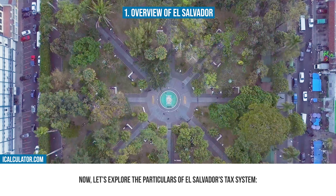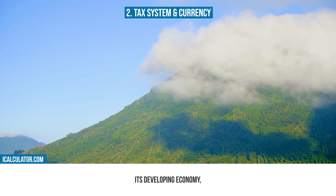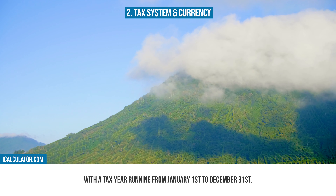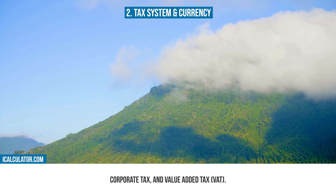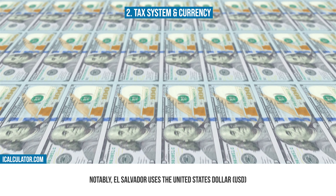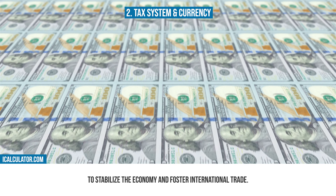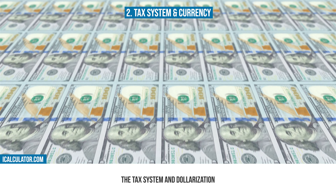Now, let's explore the particulars of El Salvador's tax system. El Salvador's tax system is structured to support its developing economy, with a tax year running from January 1st to December 31st. It includes progressive income tax, corporate tax, and value-added tax (VAT). Notably, El Salvador uses the United States dollar (USD) as its official currency, a decision made in 2001 to stabilize the economy and foster international trade. This use of the USD simplifies financial transactions and reflects the country's strong economic ties with the United States. The tax system and dollarization play crucial roles in shaping El Salvador's economic landscape.